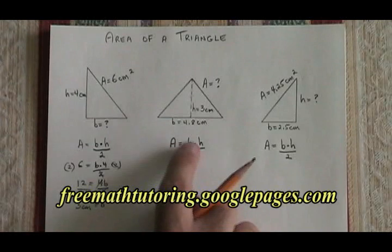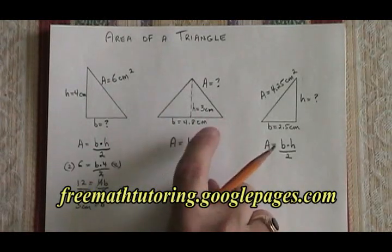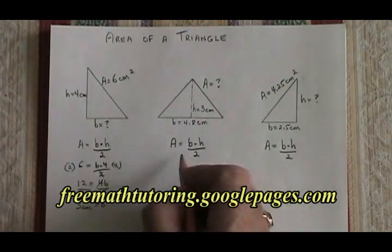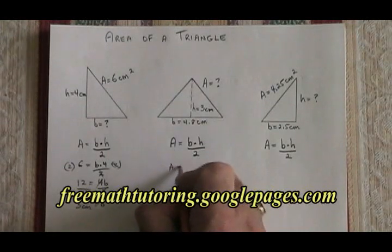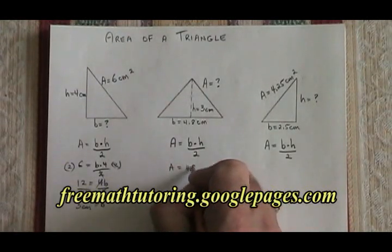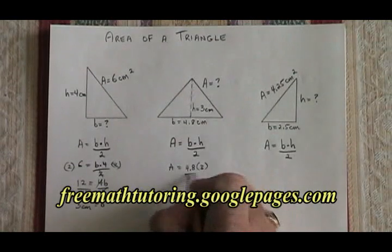In this middle triangle, we know our base and our height. We'd like to know our area. A equals B times H over 2 becomes A equals 4.8 times 3 divided by 2.